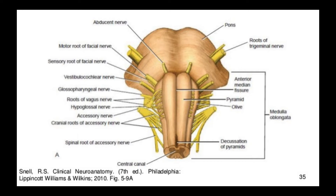The pyramids contain corticospinal fibers. At the lower part of the pyramids there is decussation — what is decussation? It means that nerves cross over. You have heard that the left brain controls the right side and the right brain controls the left side. The reason for this is that the nerves, before entering the brain, cross over and decussate.